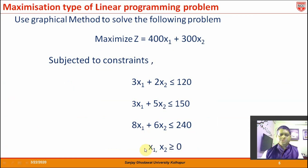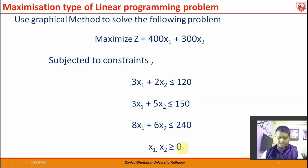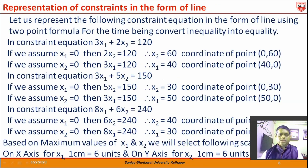Sometimes the non-negativity constraint is not given, but we have to assume it, because the solution given by different methods in operations research must be feasible and must be able to be implemented. It is not a pure mathematics problem, and that is why we do not entertain any negative values of x₁ and x₂. So this non-negativity constraint is always added even though it is not given in the question.